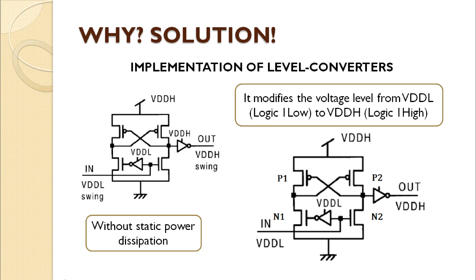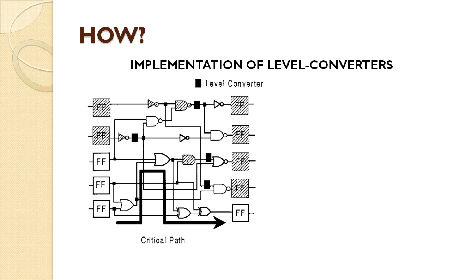In order to solve the problem contemplated in the previous slide, we are going to implement circuit level converters, which modify the voltage level from VDD-L to VDD-H and do not dissipate static power. If we analyze the circuit for the case in which the input is at logic 1 low, we can observe that transistor N2 is on and transistor N1 is off. It implies that the gate terminal of P2 transistor is a logic 1, therefore P2 is off, while the gate terminal of P1 transistor is a logic 0, therefore P1 is on. In this way, at the output we will obtain a logic 1 high, that is, VDD-H voltage. So, if we implement the level converters in the circuit presented before, we get the following figure, in which there are four level converters placed for the transitions from VDD-L gates to VDD-H gates.